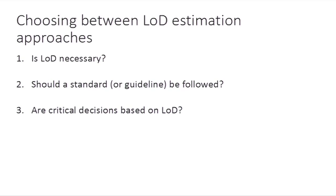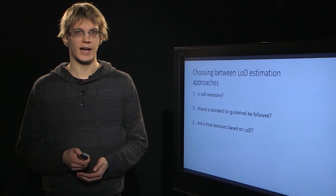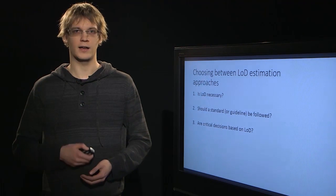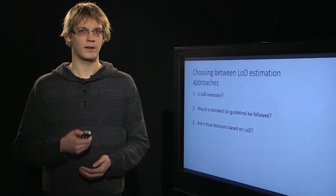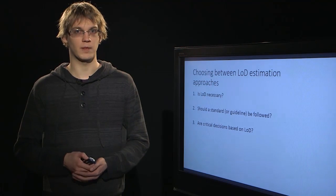Thirdly, we must answer a question whether a critical decision is really based on this limit of detection value. For example, if we are analyzing an athlete's blood and we are trying to detect some forbidden doping compound from the blood,